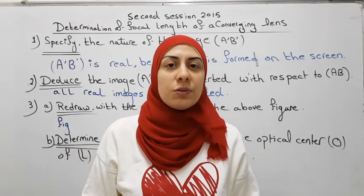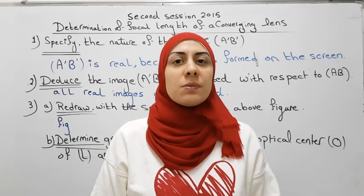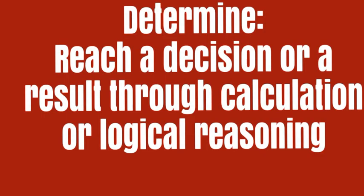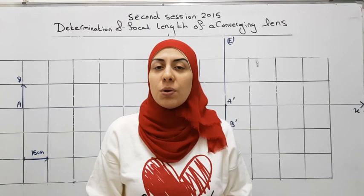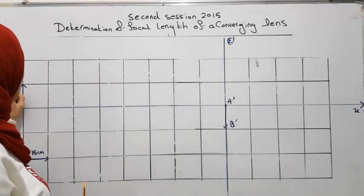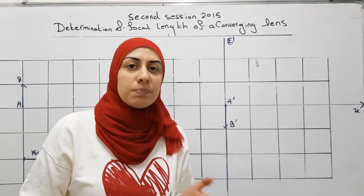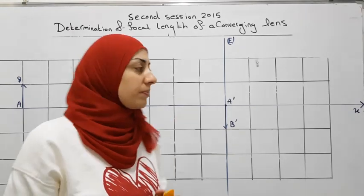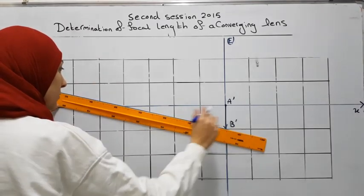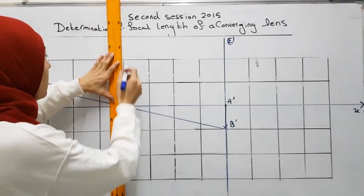In this part, we have to determine graphically the position of the optical center O of the lens and represent the lens L. Determine means that you have to show through logical reasoning or calculation. B, O, and B' are collinear because any ray passing through O continues undeviated. So if we join B and B', the intersection of this line with the optical axis is the position of the optical center O. Now we can draw the converging lens.